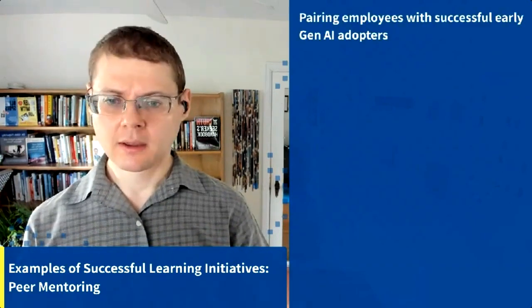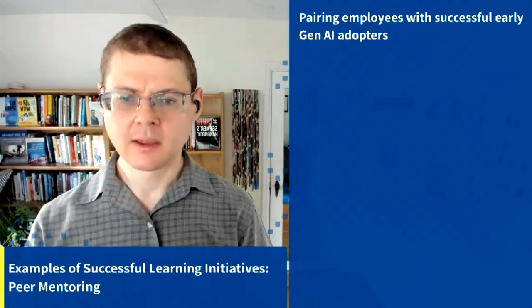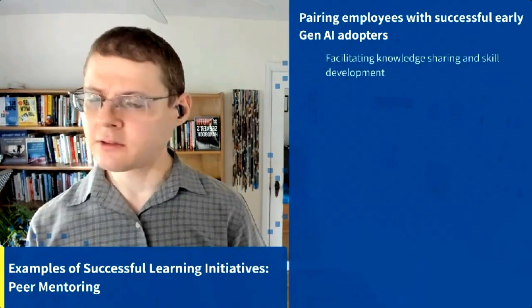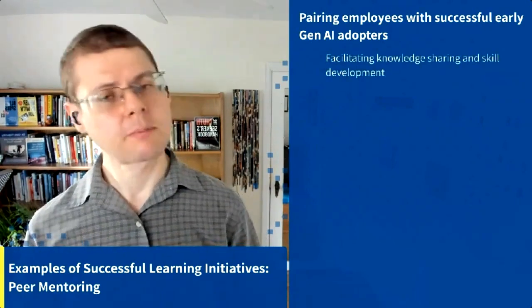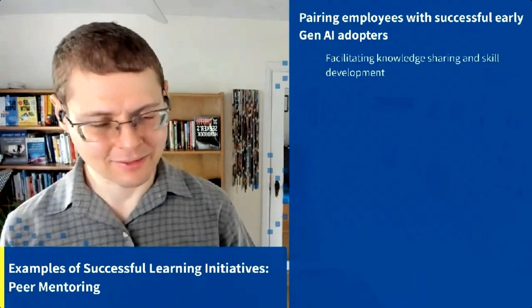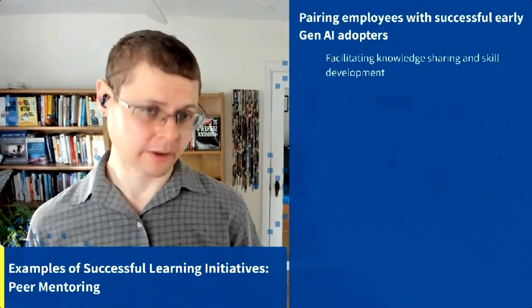Let's talk about some specific examples. Those were the generalities — the general framework at a high level. One specific example is peer mentoring as a successful learning initiative. You already have some generative AI early adopters, and you want to identify them, encourage them to come forward, and facilitate knowledge sharing and skill development by pairing them with employees who are not early adopters but are willing to take it on.